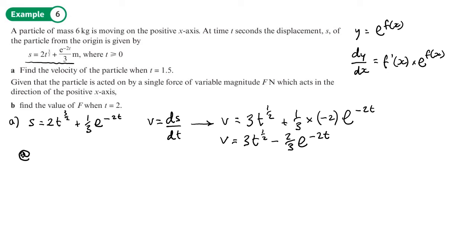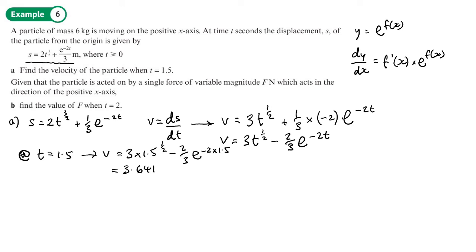Substituting t = 1.5: v = 3 × (1.5)^(1/2) − (2/3) × e^(−2 × 1.5). Working that out gives 3.64104, so to three significant figures the velocity is 3.64 m/s.